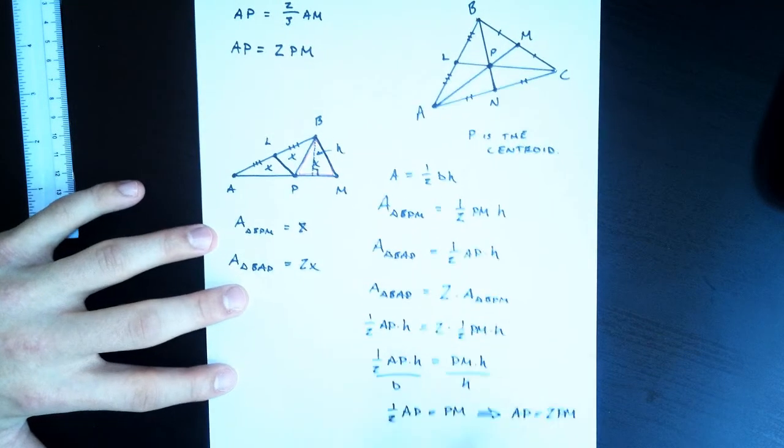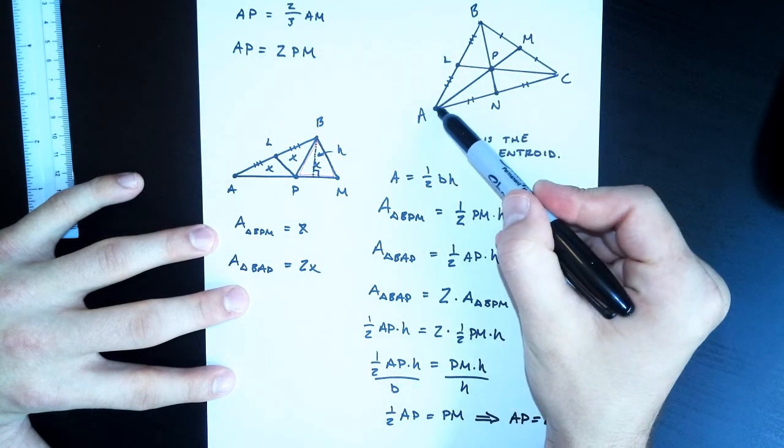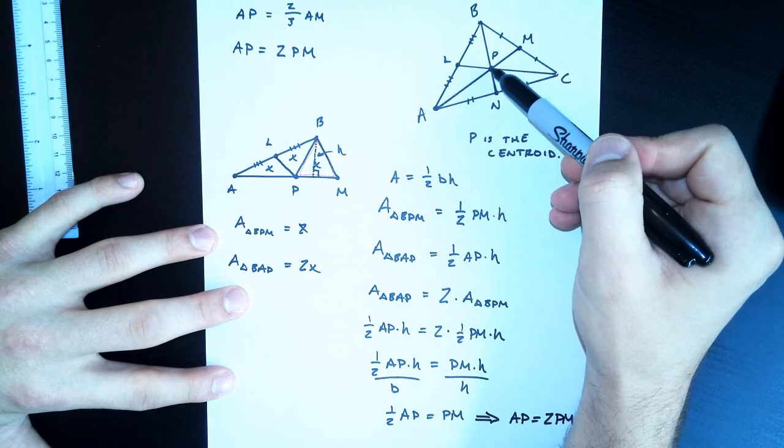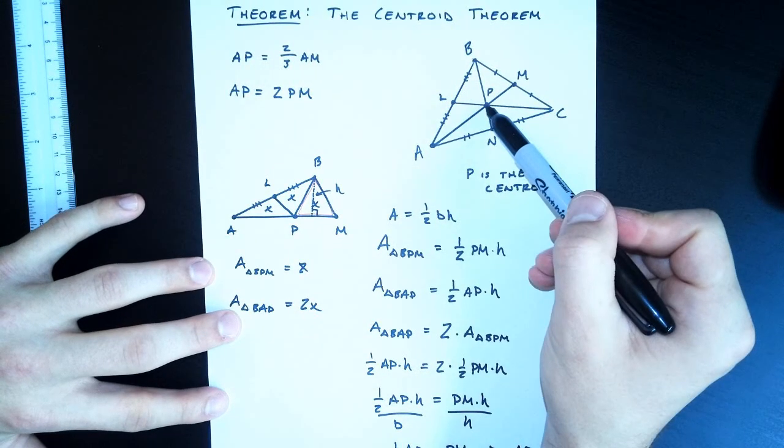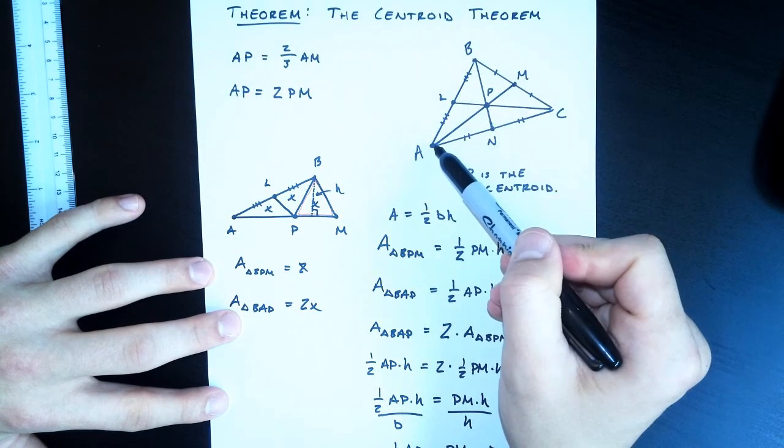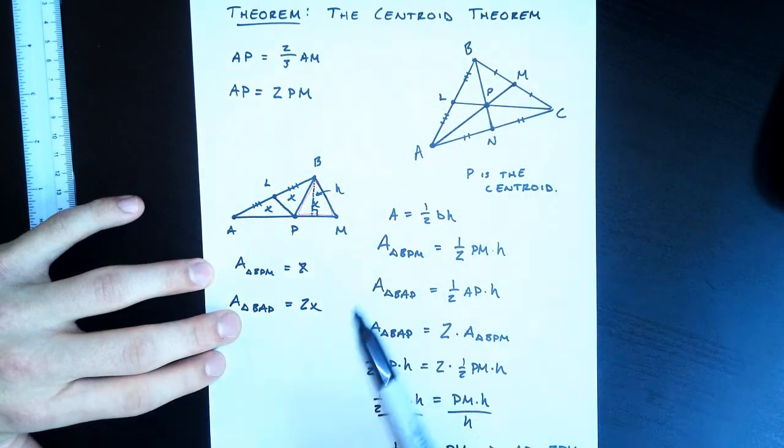So what we showed was that the length of AP is twice as long as the length of PM. In other words, the centroid is two-thirds of the distance from the vertex to the opposite side.